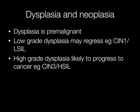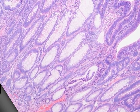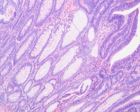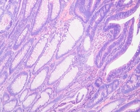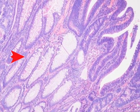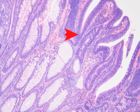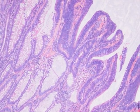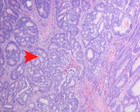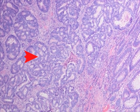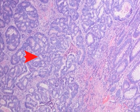Dysplasia is pre-malignant. The low-grade changes may regress, but high-grade or severe dysplasia has a significant chance of eventually developing into carcinoma. This is a tubular adenoma where you can see some normal crypts, some dysplastic crypts, and elsewhere there is a focus of carcinoma that has arisen in this polyp.